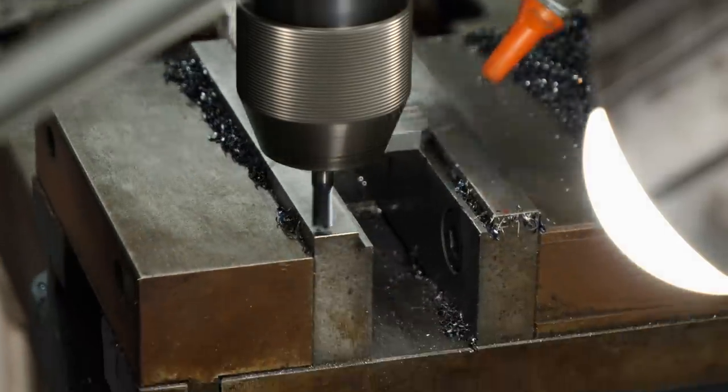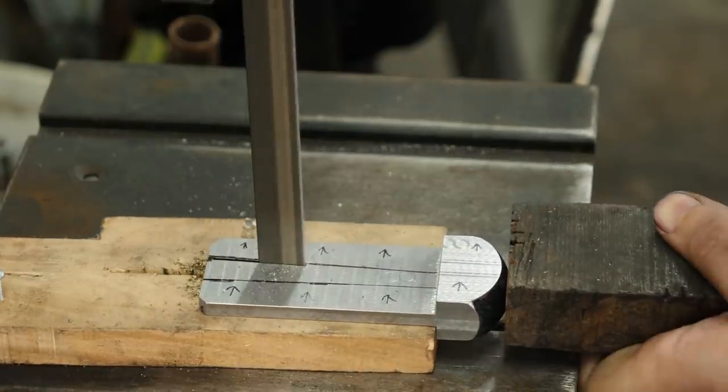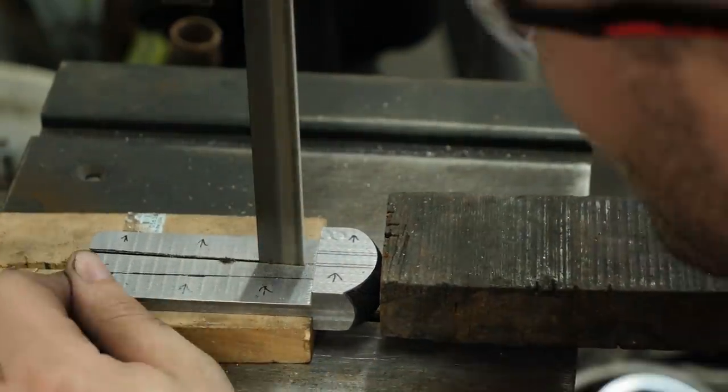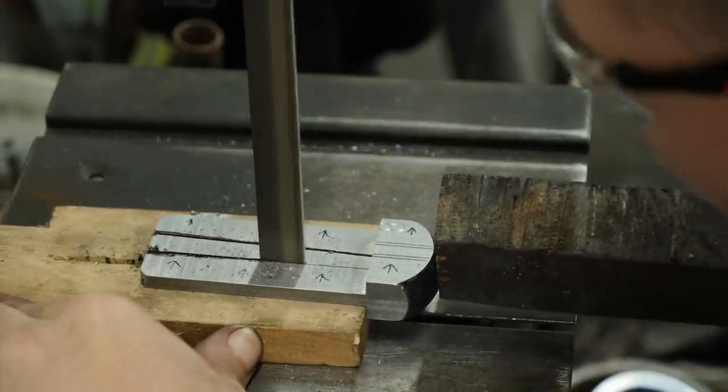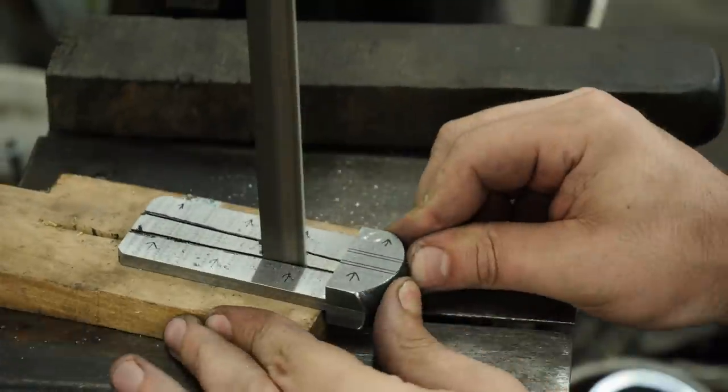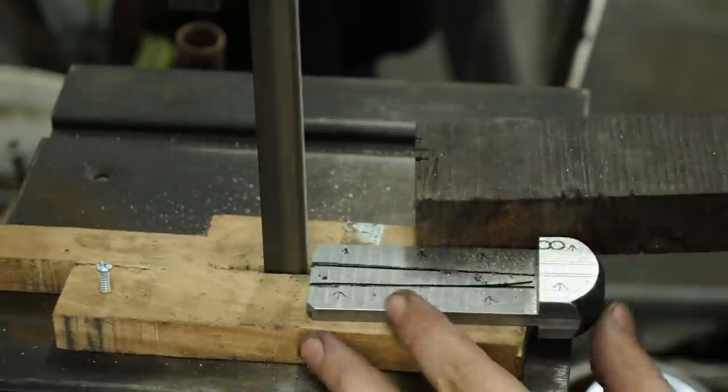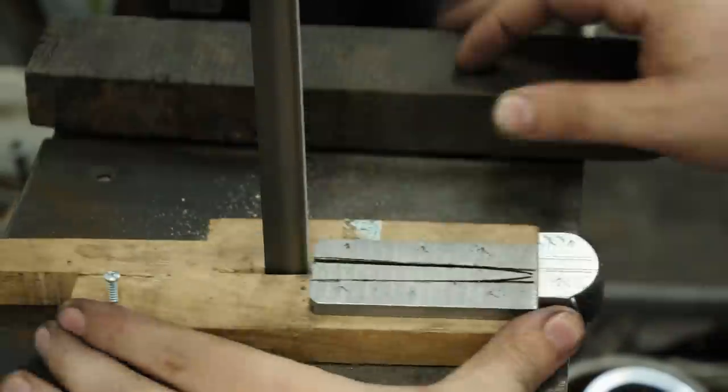Once we're done with all that milling, we can fire up the bandsaw and start cutting out the slot for the tang. The end of our tang will be threaded and have a pommel nut that screws on from the very end of the handle, holding everything firmly in place.